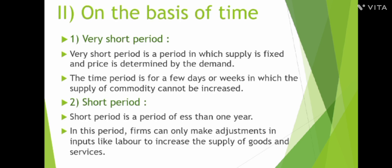On the basis of time, we have four categories. Very short period is a period in which supply is fixed and the price is determined by demand. It refers to a time period of a few days or weeks in which the supply of commodities cannot be increased.